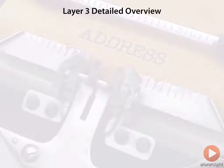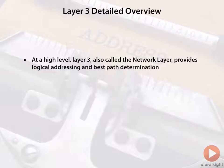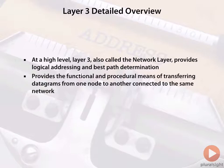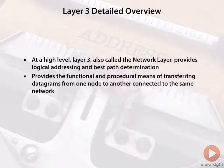Looking at some details of layer three at a high level to begin with — we call this the network layer. As mentioned earlier in this lesson, it provides logical addressing as well as best path determination. Essentially what we're talking about here is IP version 4 as our logical addressing, or version 6, depending on the type of network we work in and how current we are with new protocols.